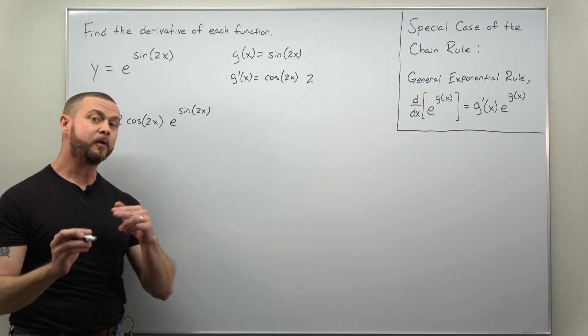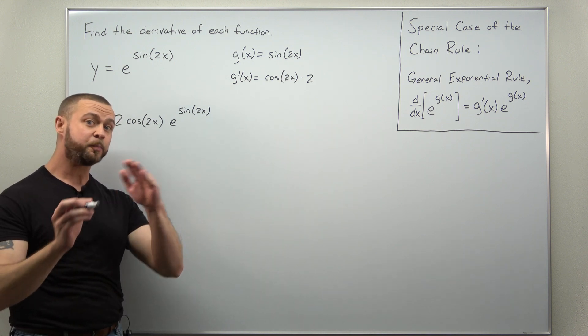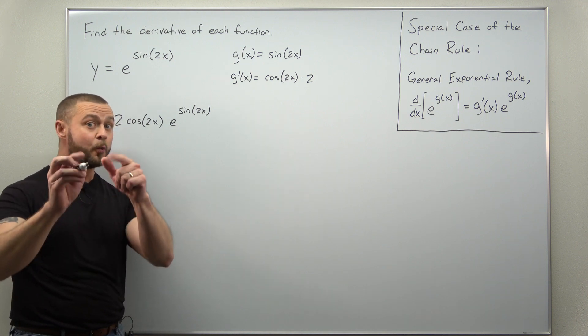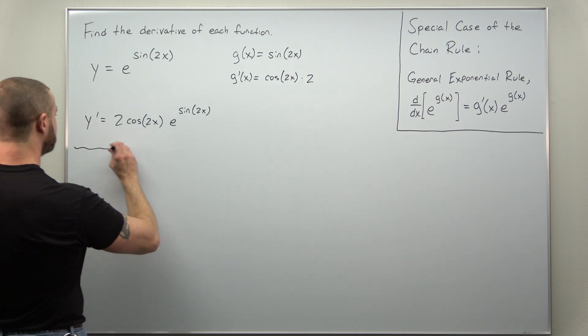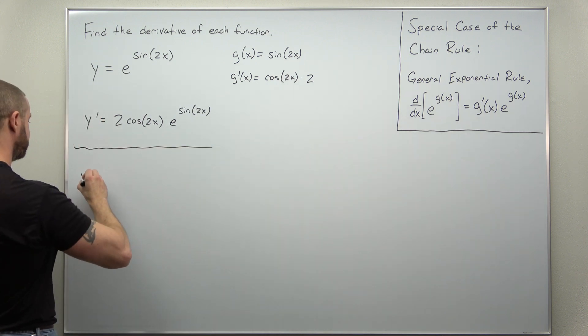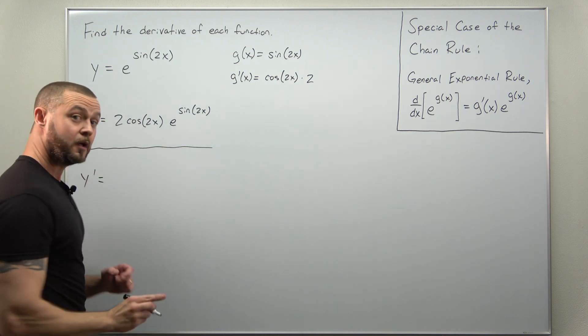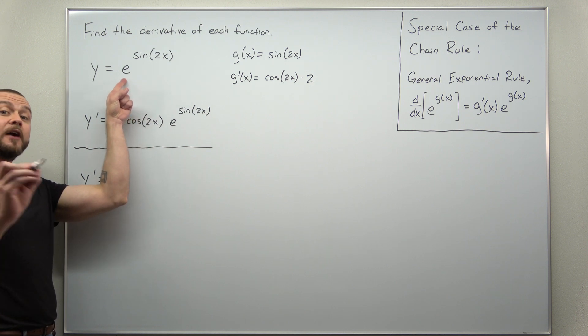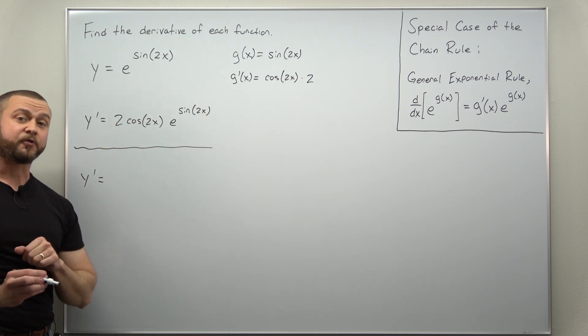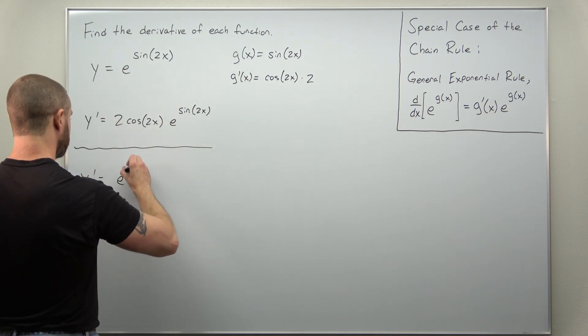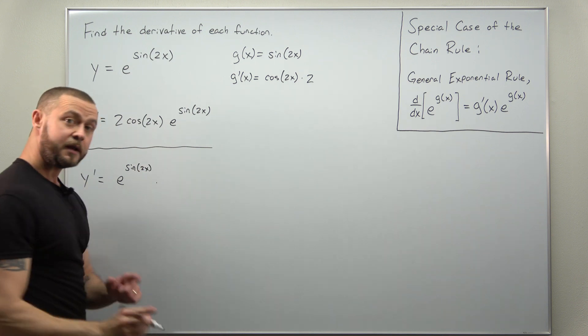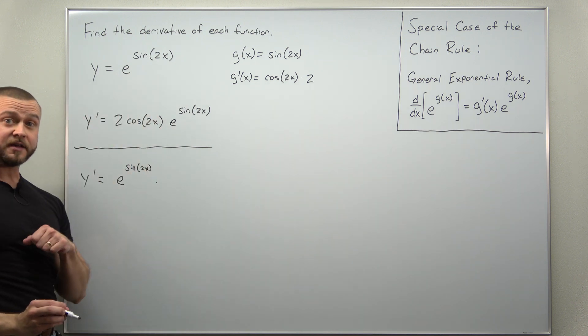Now you might be comfortable applying the chain rule, product rule, quotient rules without writing down your work and just applying it as you go. And what that would look like here to calculate the derivative: first we're going to recognize that our outer function is the exponential function. The derivative of the exponential function is itself, so we get e and we keep the inner function the same. And now we multiply by the derivative of the inside.